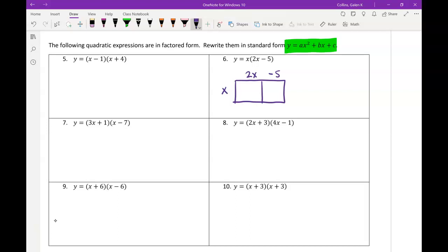And so again, what I'm really just doing to find my areas is I'm multiplying. So 2x times x gives me 2x squared, and then negative 5 times x is just minus 5x. So to write this in standard form, I have 2x squared minus 5x.